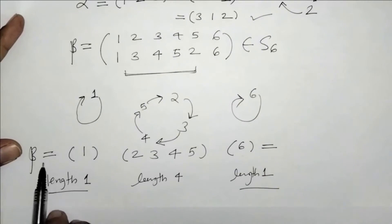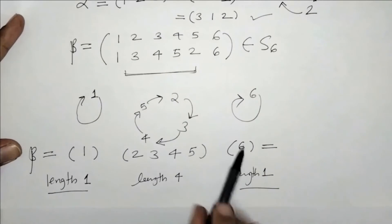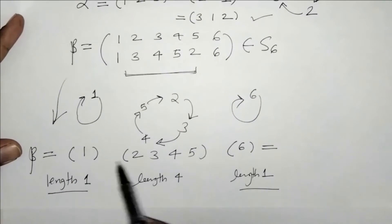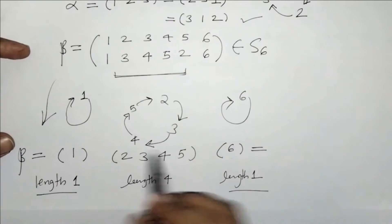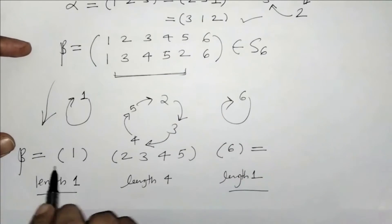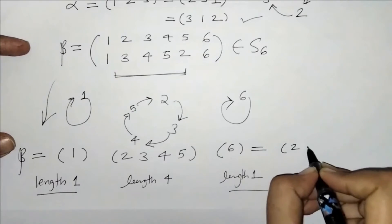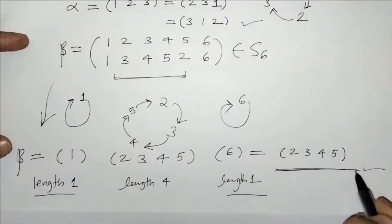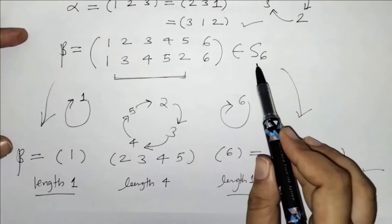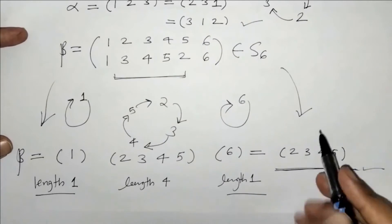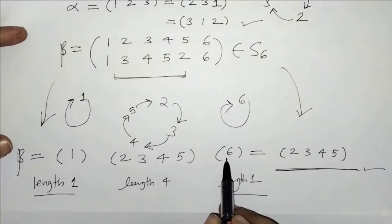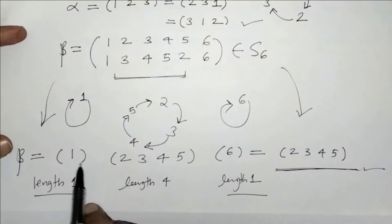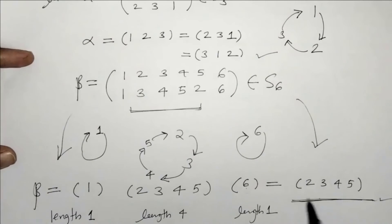For permutation beta, we have this cyclic representation. We had represented beta in cyclic form. Now, cycles having length 1 can be omitted, so we can write beta as the cycle (2, 3, 4, 5). This is the cyclic notation for permutation beta defined over set S6. Here we have 4 elements, and the remaining 2 elements — 1 and 6 — are missing, which means they map to themselves, representing the identity permutation.